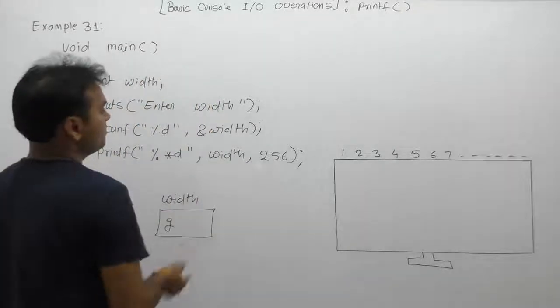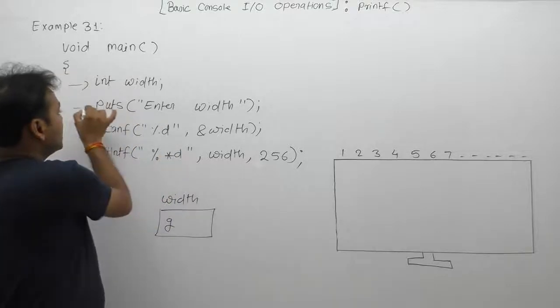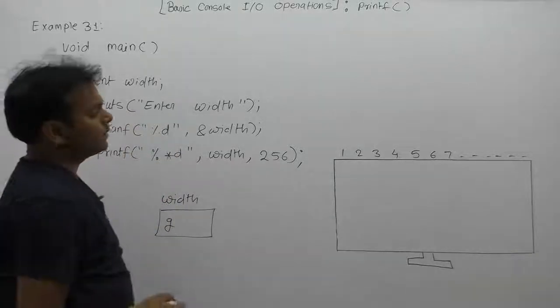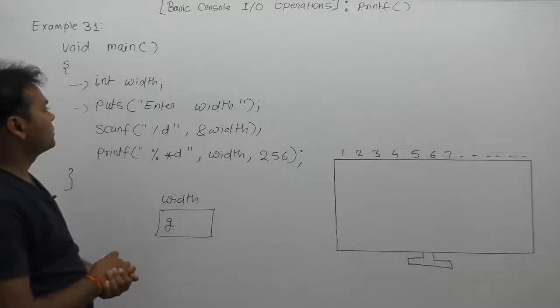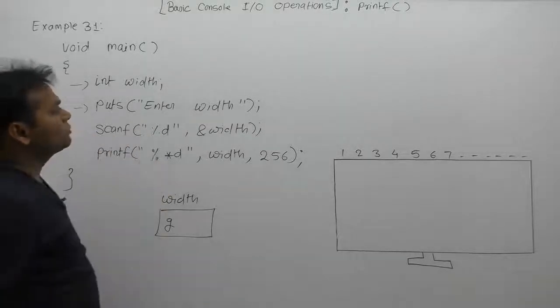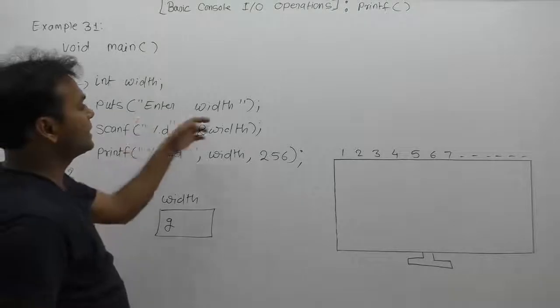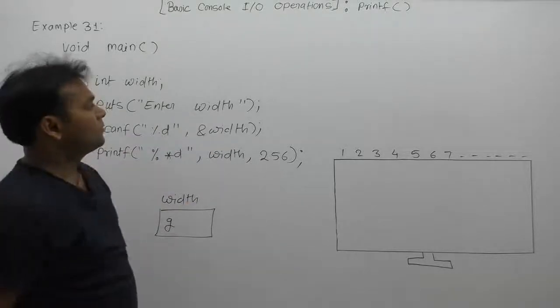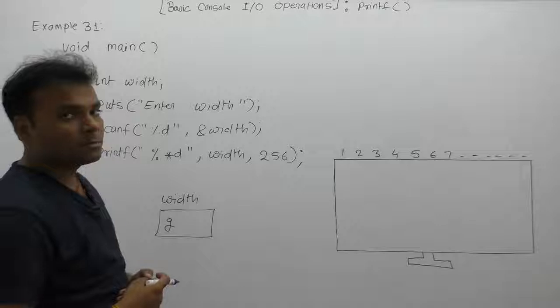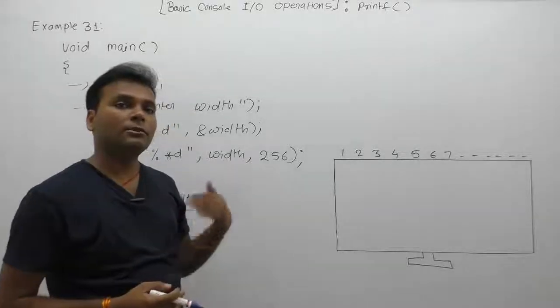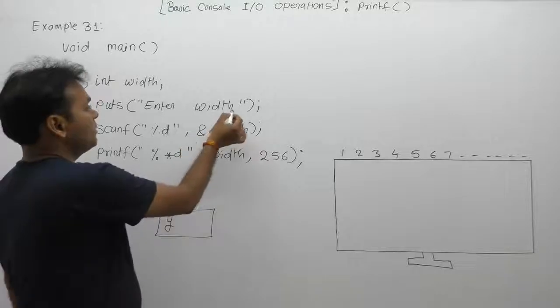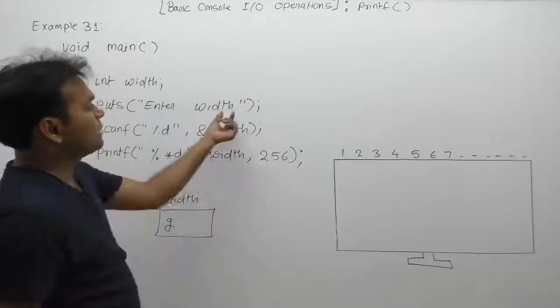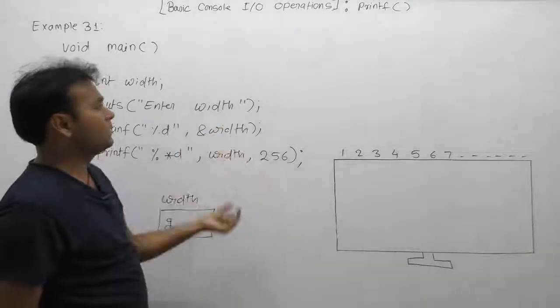Next one: puts enter width. As we are discussing during the output function, puts or putc is used for displaying a single string or single line. What is the difference between displaying any string using printf or using puts? In case of puts, we don't have any need to specify extra escape sequences.